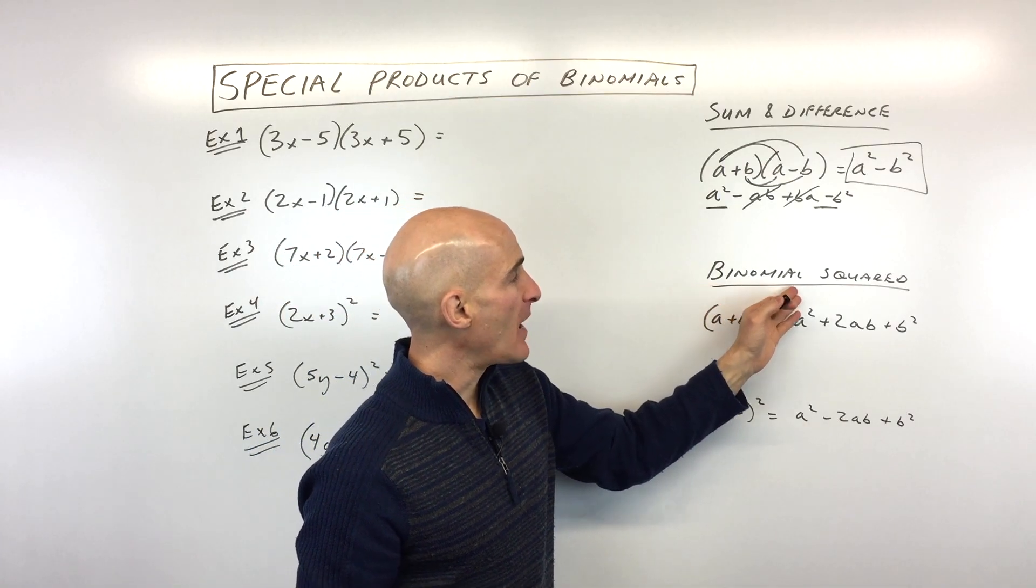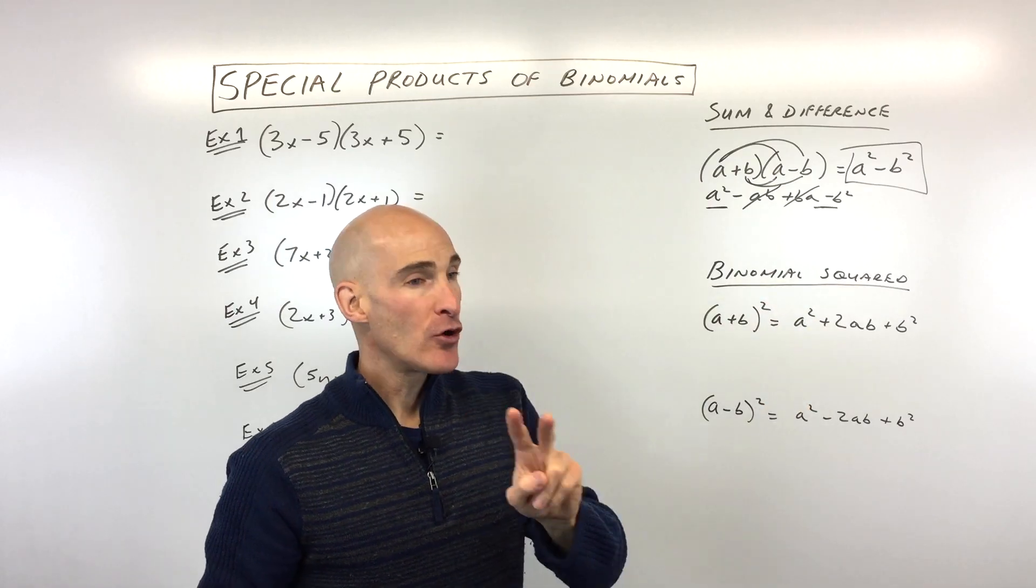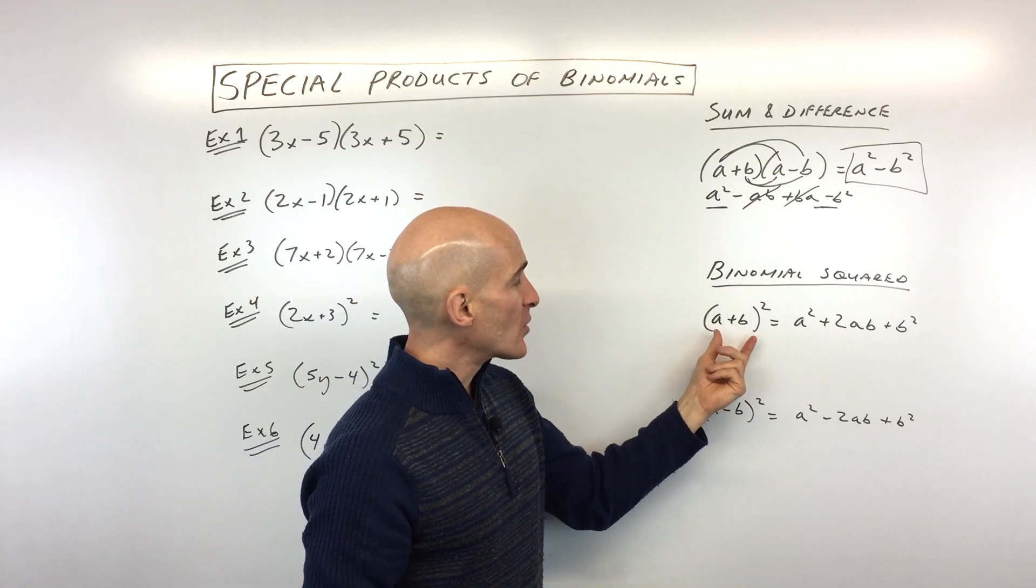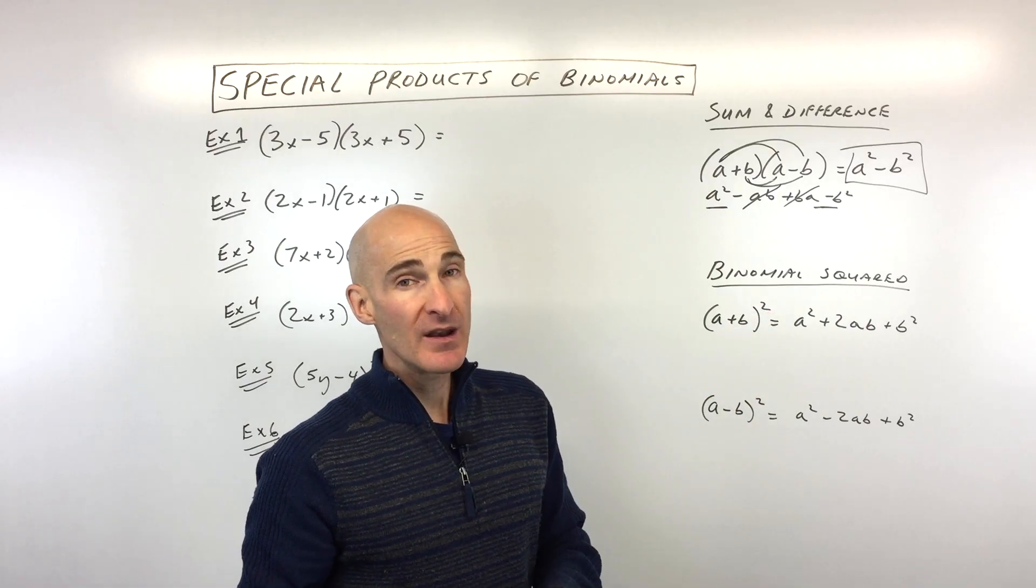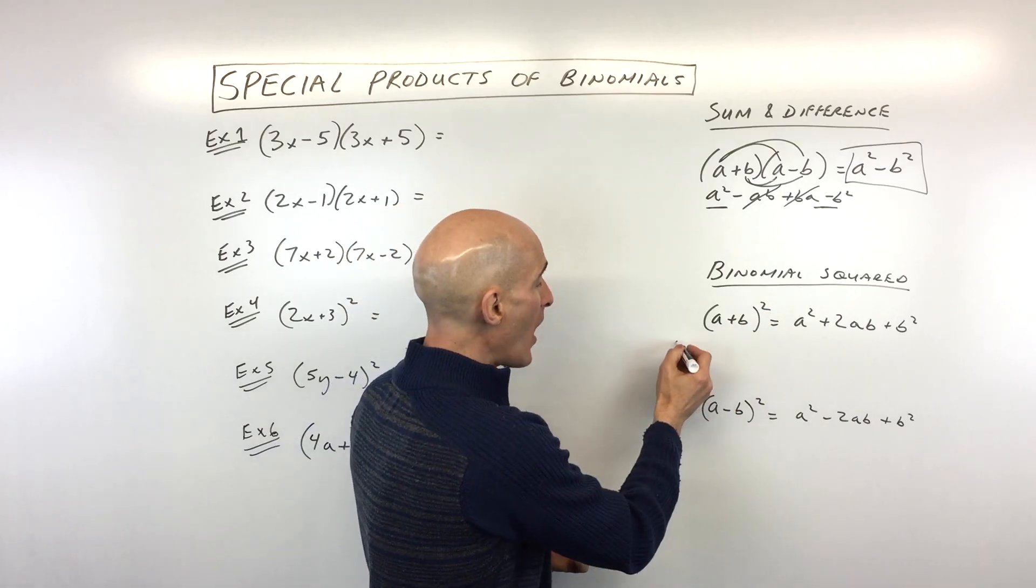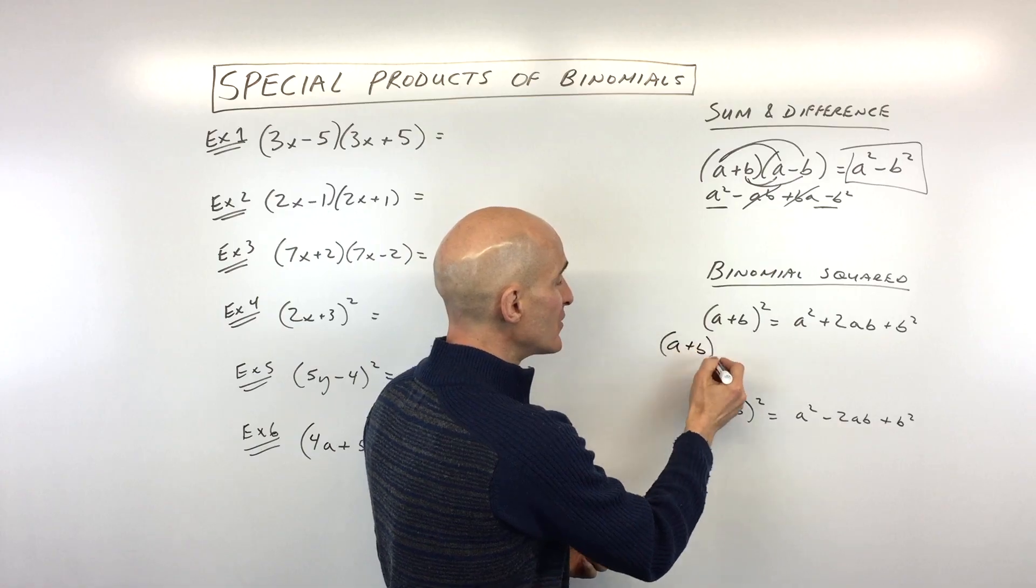We're going to do some examples. You'll see how that works. But the second type that we're going to work with is the binomial squared. Remember, binomial means two terms, and it's the quantity raised to the second power.